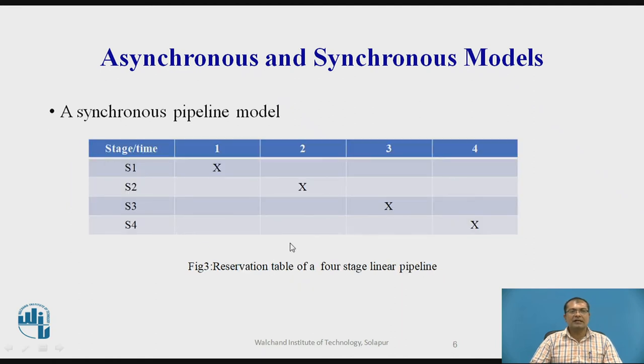So this is a reservation table for a four stage linear pipeline. So along x axis we will find the time, time slot t1, t2, t3, t4. And along y axis we will find the different stages s1, s2, s3, s4. So this x indicates that the stage s1 is active during time slot t1. After that the next stage will be active in time slot t2. Then next s3 will be active in time slot t3. Then s4 in t4 like this.